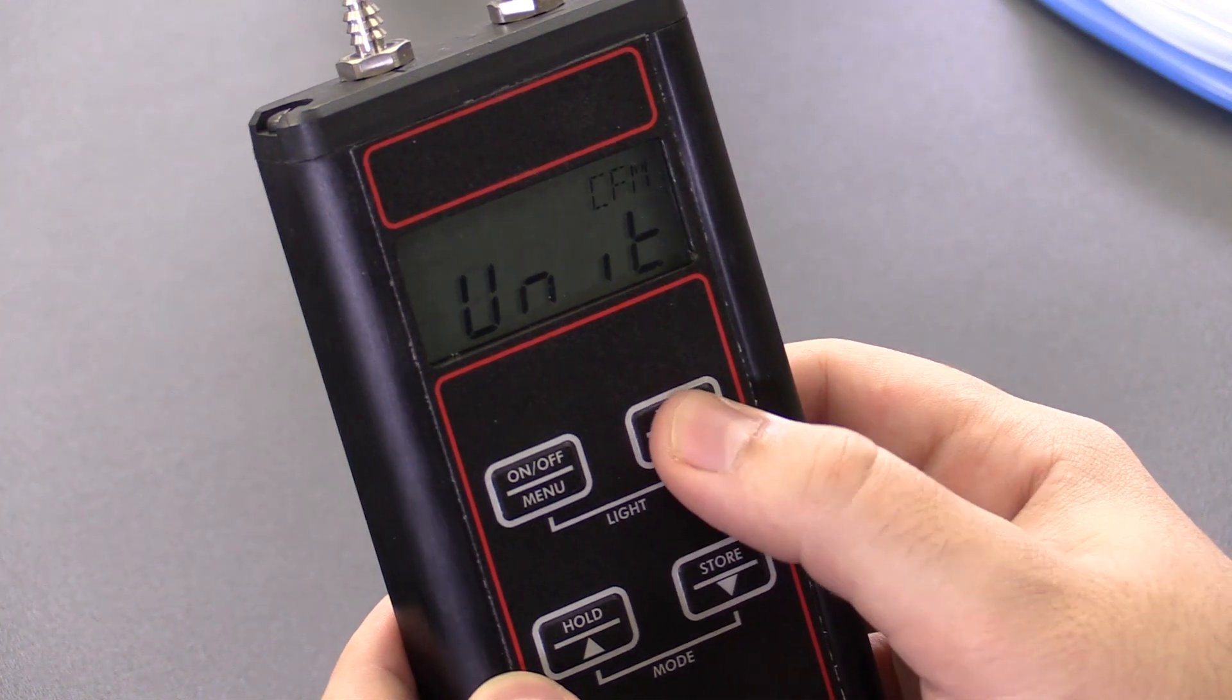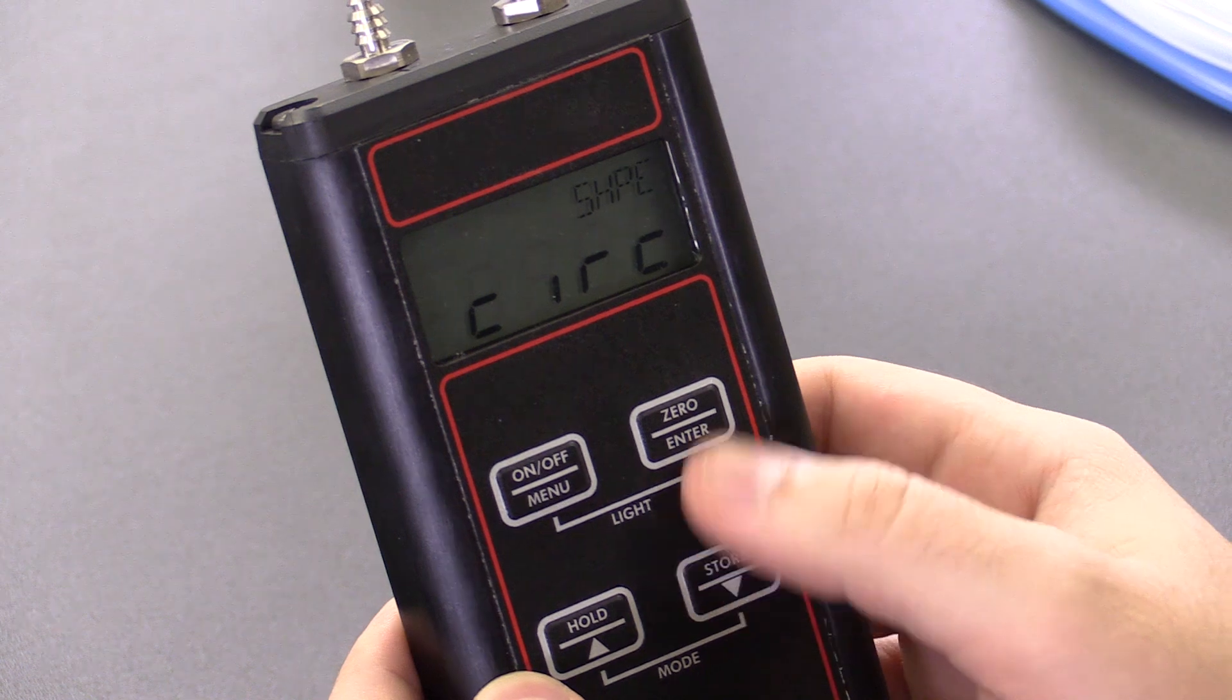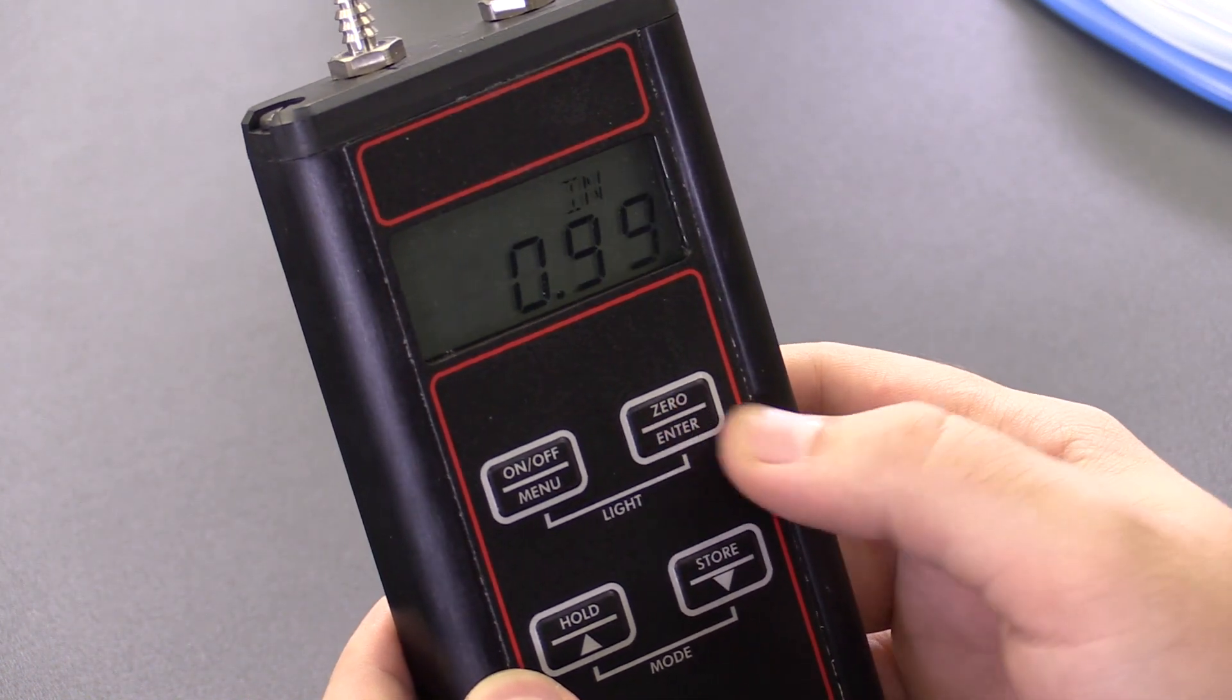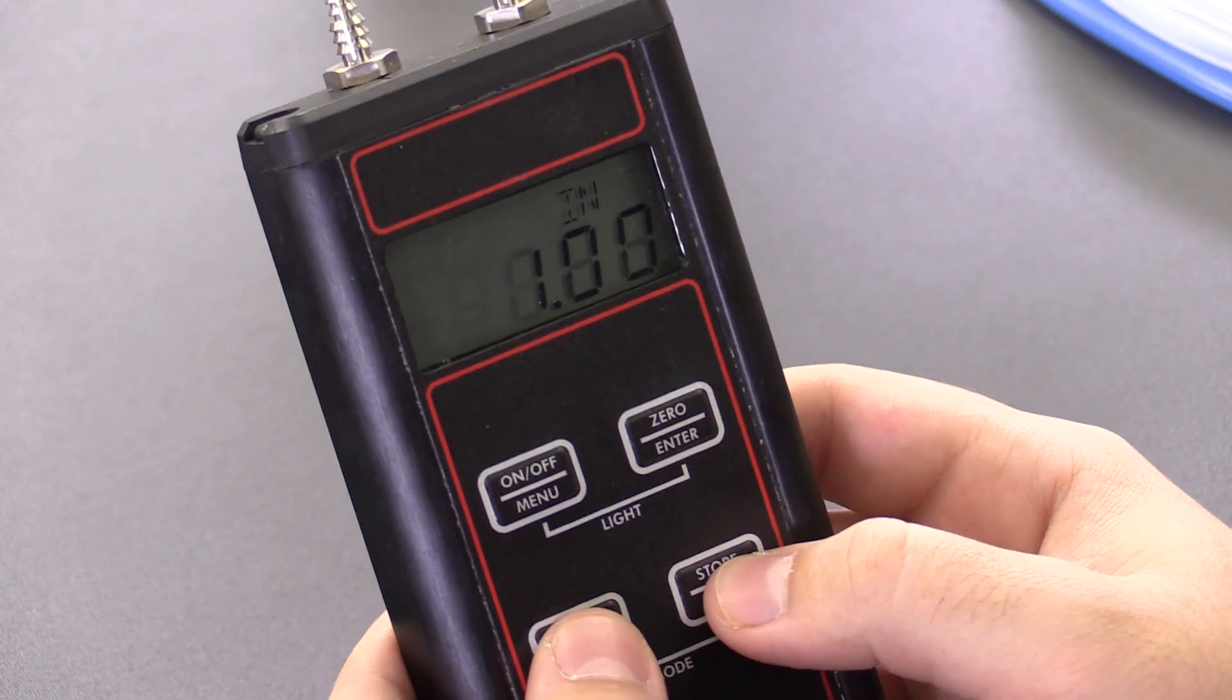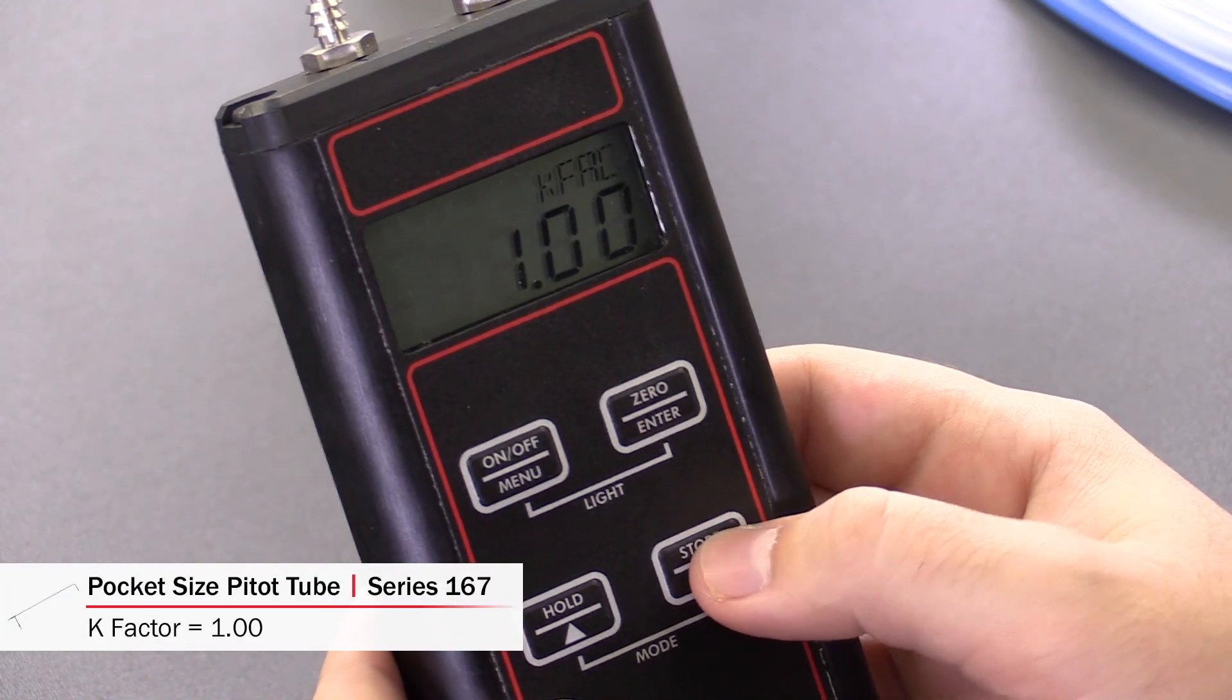I'm going to go with CFM and now we're choosing the shape of our cross-sectional area. Ours is a circle. And now we can modify the diameter of said circle. And now we choose the K-factor of our pitot tube.